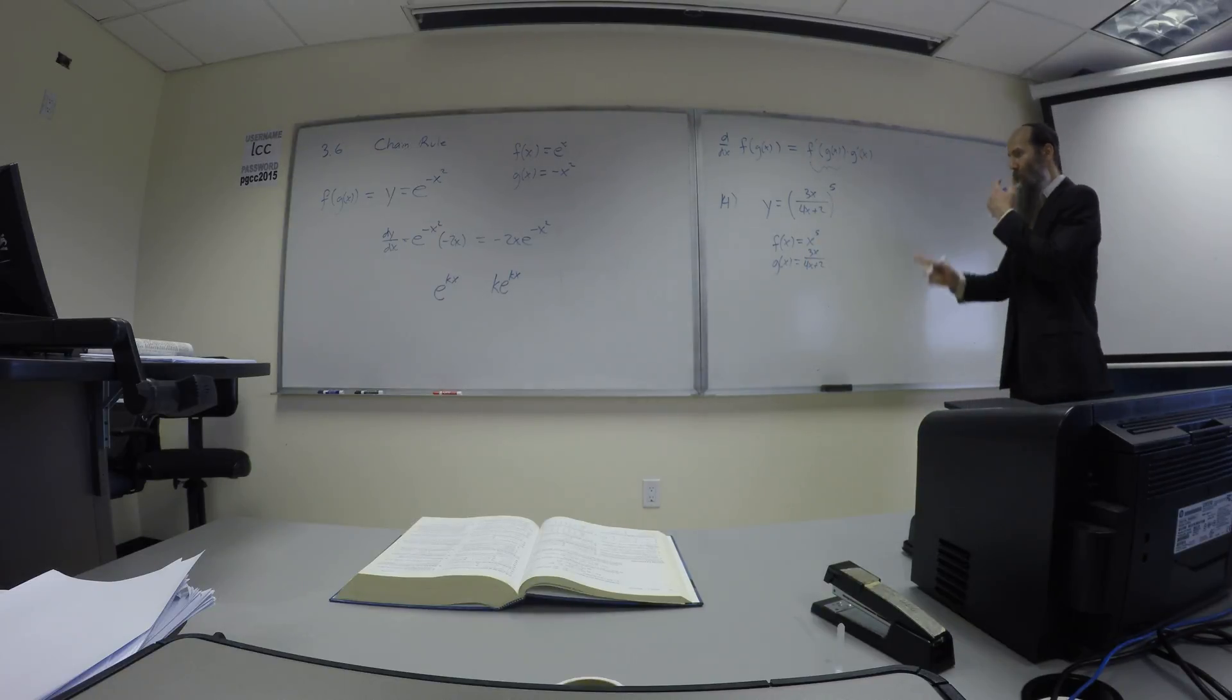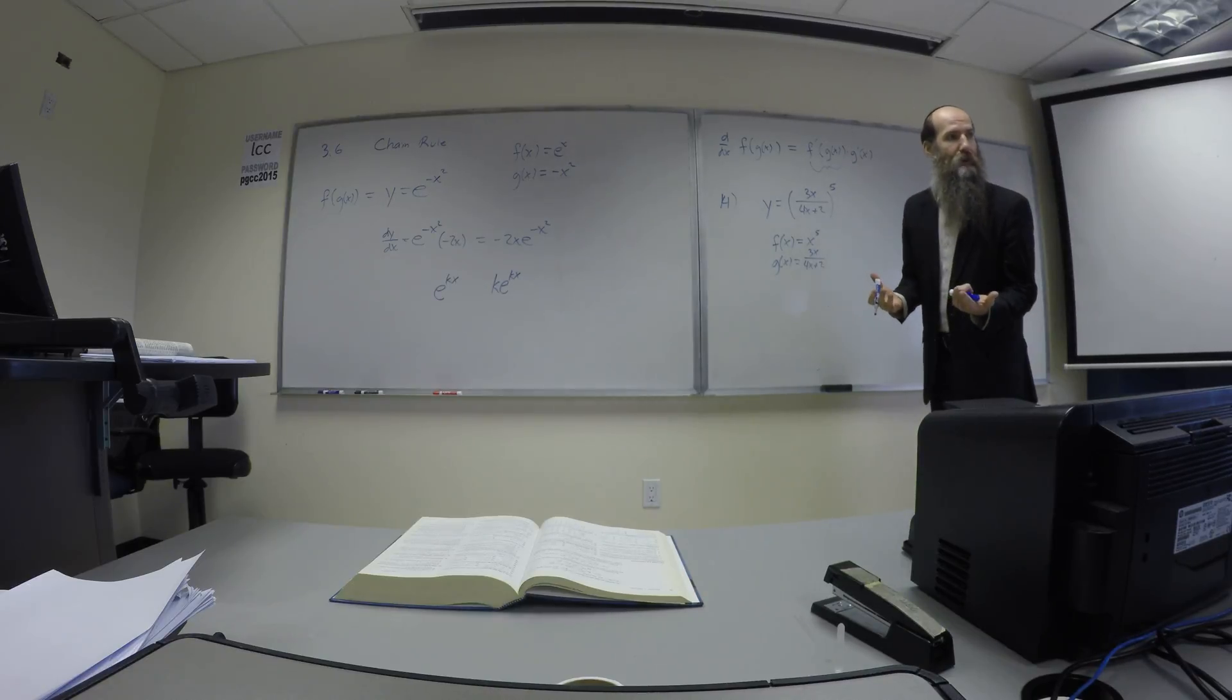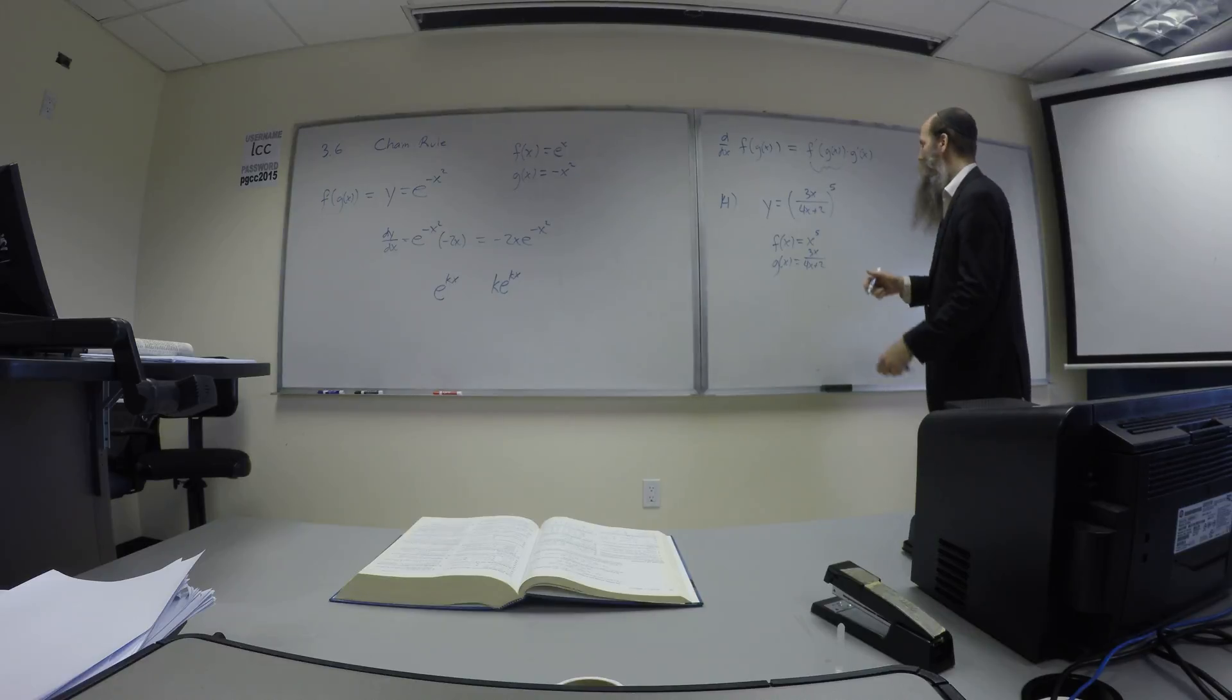Now, instead of doing what we did a second ago, what I'd like to do is just explain it the way I think about it. All you're going to do right now is a power rule on the outer function, you know that already. So all you're going to do is bring down the five. So you want dy dx, this is a way to look at it, perhaps more efficiently.